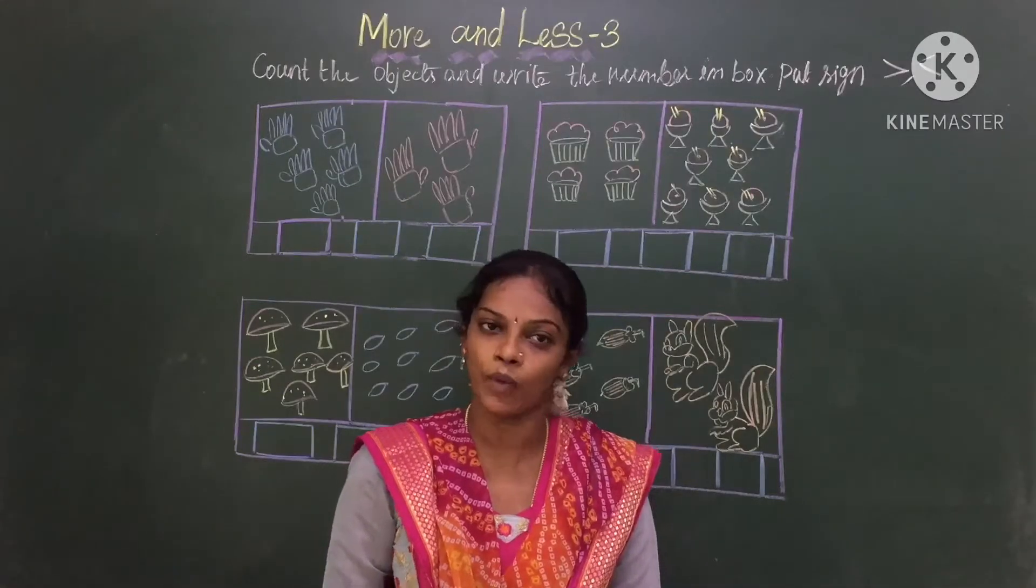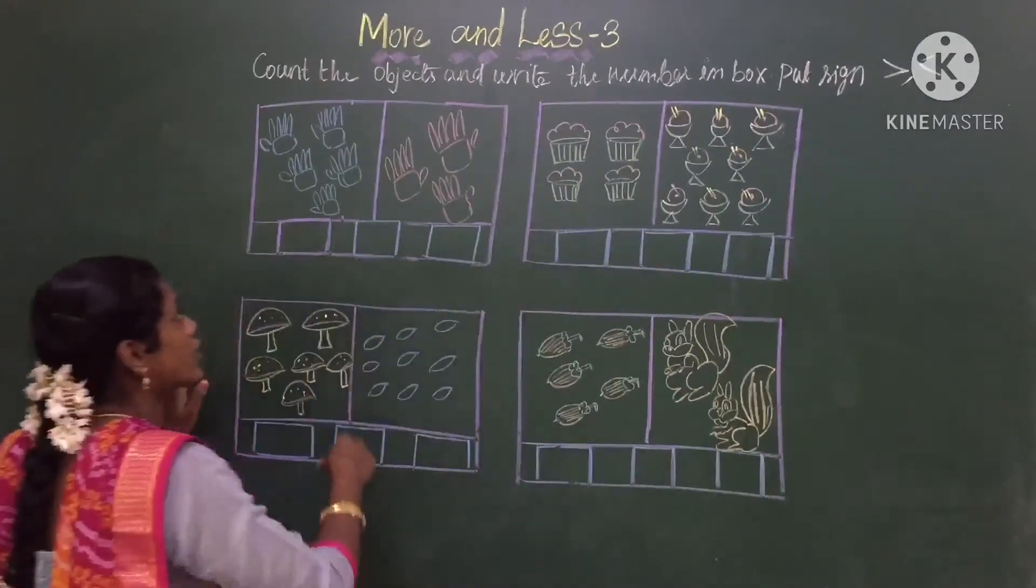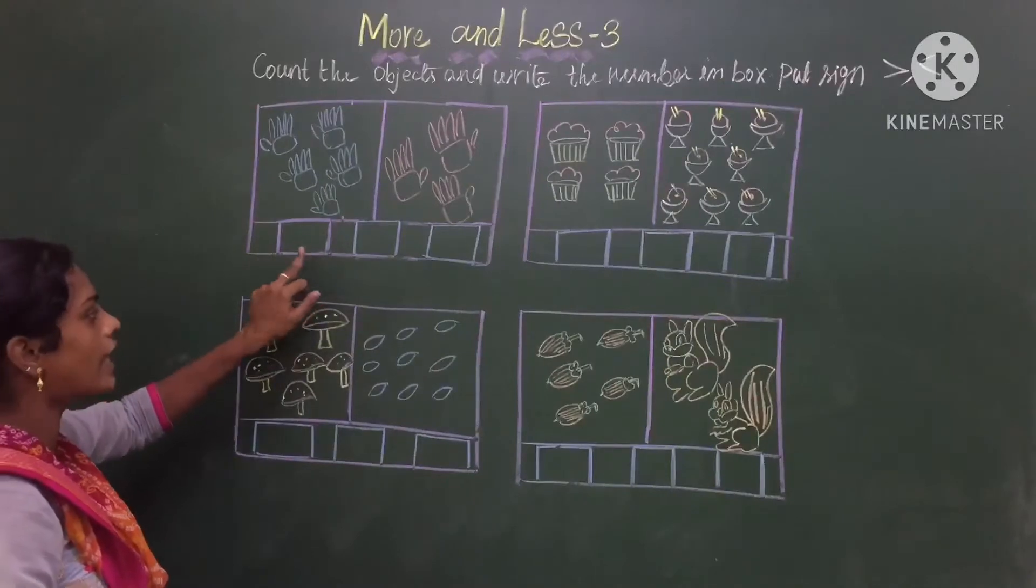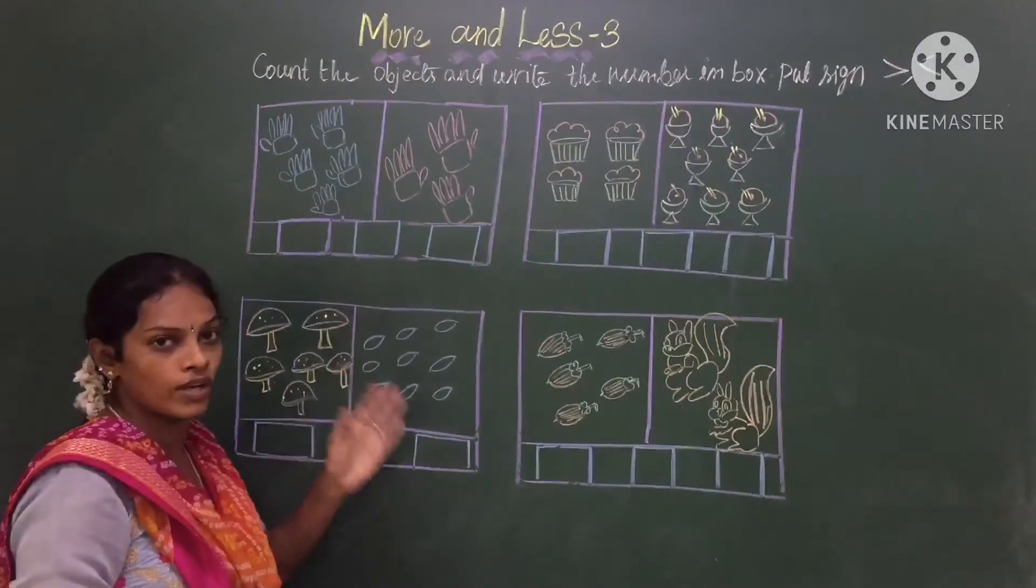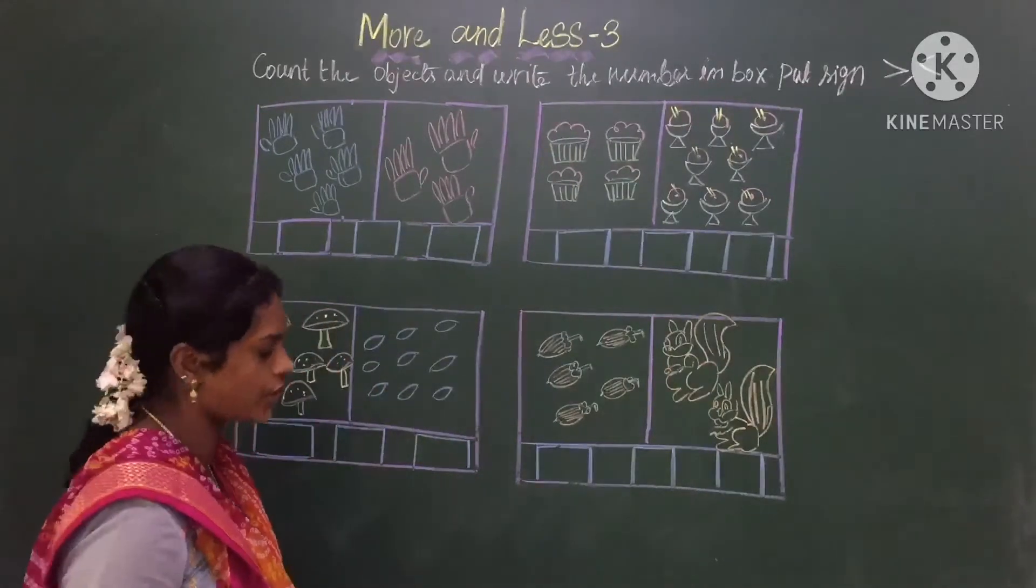Okay children, today we are going to learn more and less number 3. We already learned more and less. Let us do the worksheet. In this worksheet, what we have to do? We have to count the objects and write the number in the box, and we have to see whether it is more or less. According to that, we have to put the correct sign. Okay, let us do the worksheet now.